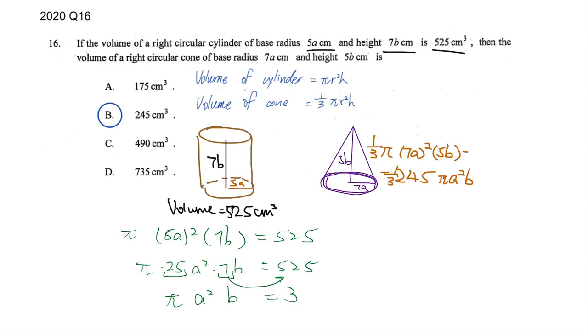You should be able to get the answer. It should be 245 over 3, nothing simplifiable. And then next thing, what you can see is we know the value of πa²b, it's also here.